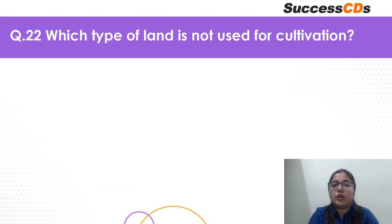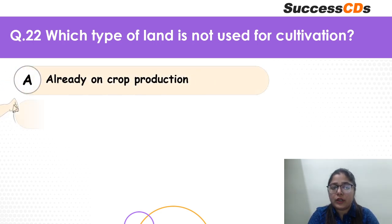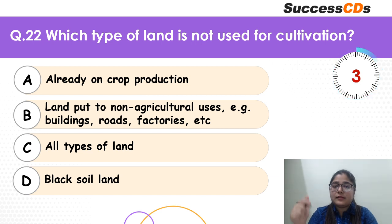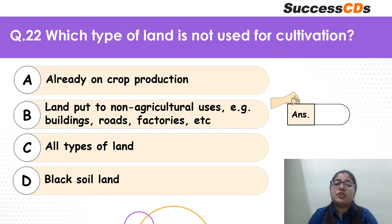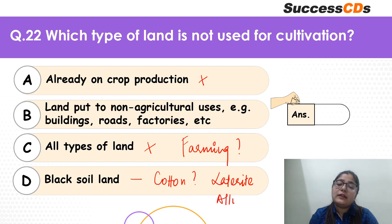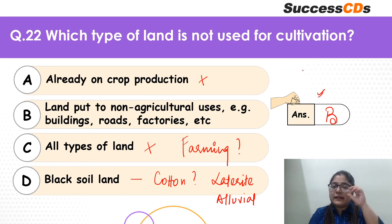Move to question 22: which type of land is not used for cultivation? Land already on crop production? Land put to non-agricultural uses? All types of land? Or black soil land? Black soil is very good for cotton — laterite and alluvial soils help cultivation. All types of land is far-fetched. The correct answer is B — land put to non-agricultural uses cannot be used for cultivation.